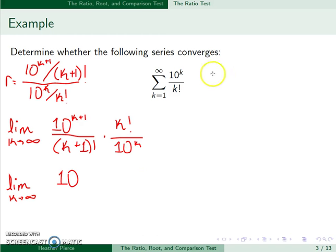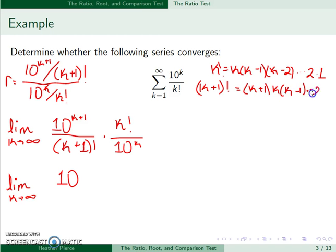And then as far as the factorials go, k factorial is k, k minus 1, k minus 2, all the way down to 2 times 1. If I do k plus 1 factorial, I have k plus 1 times k times k minus 1, all the way down to 2 and 1. So you'll see the only difference between these two terms is this k plus 1. So this actually cancels to just give a k plus 1 on the denominator.